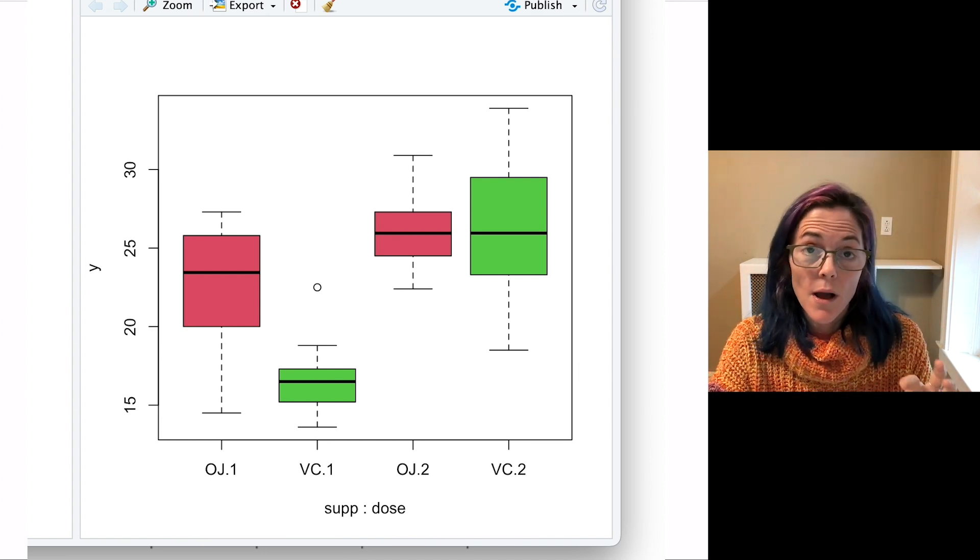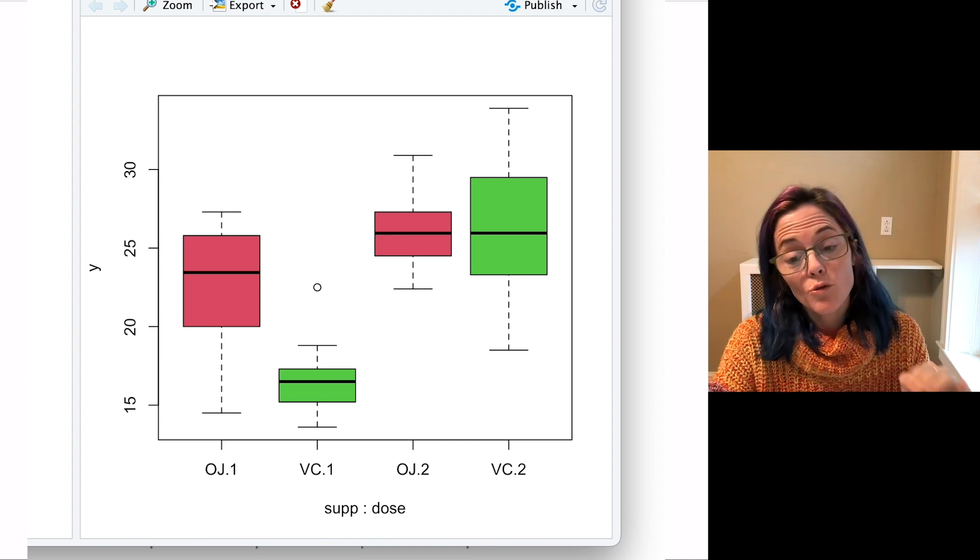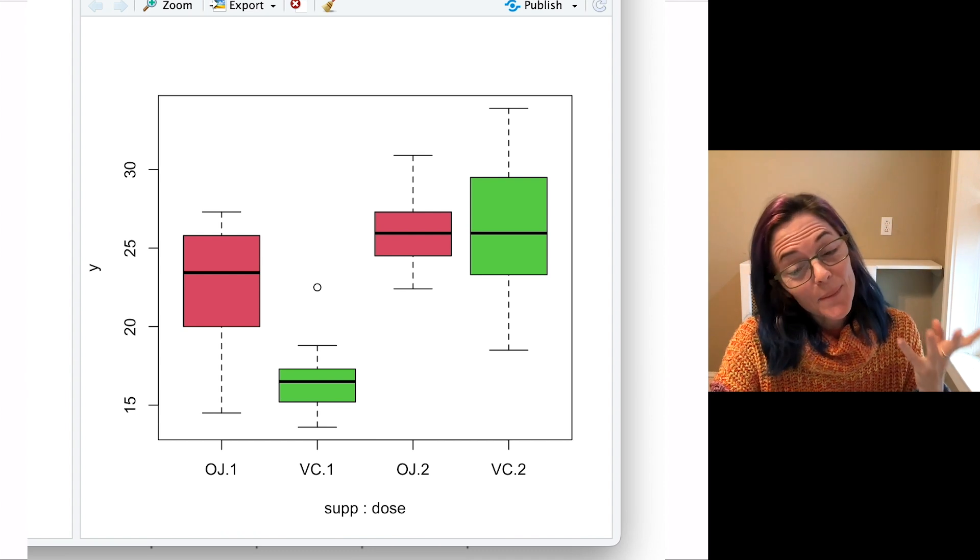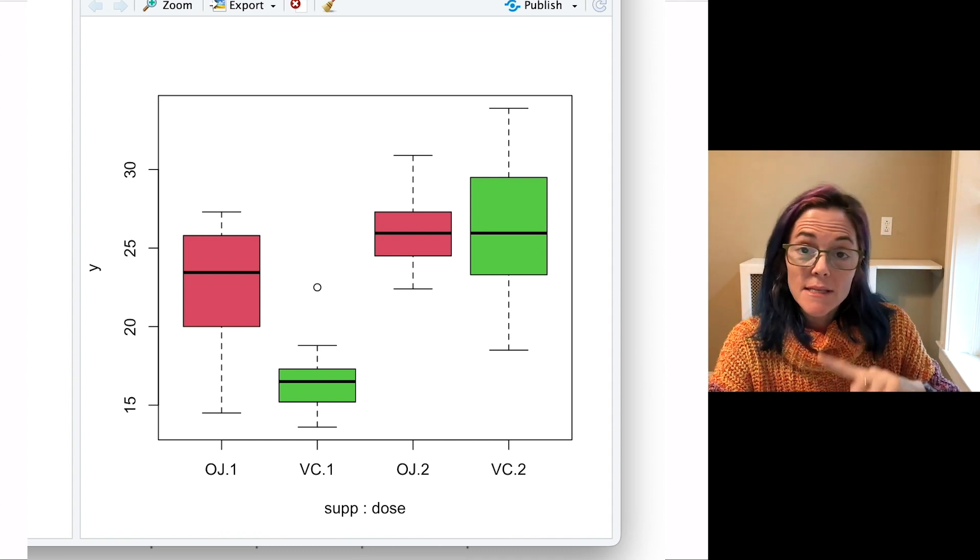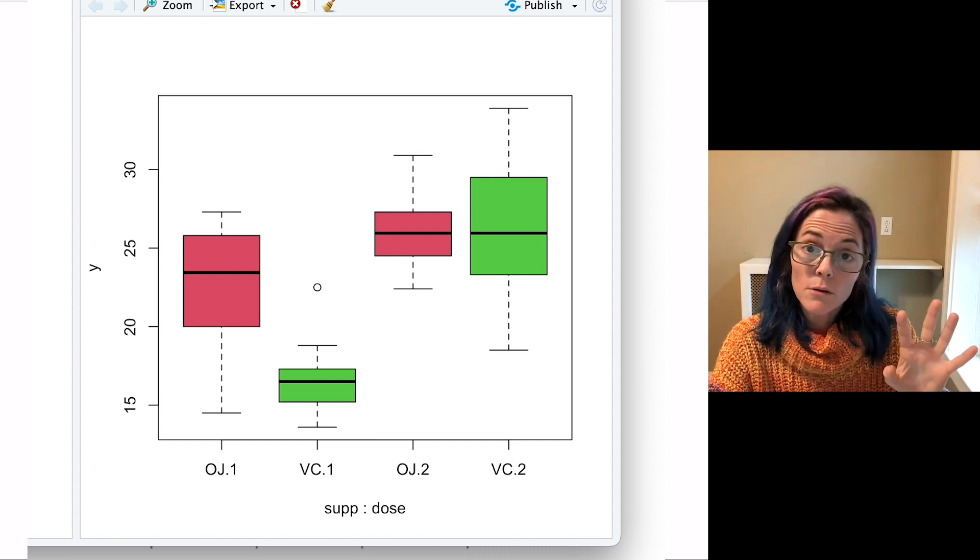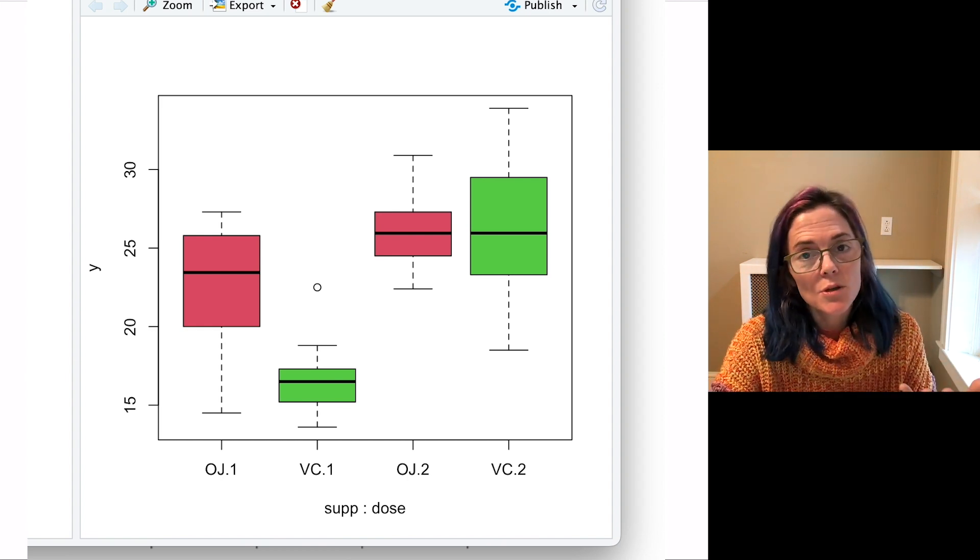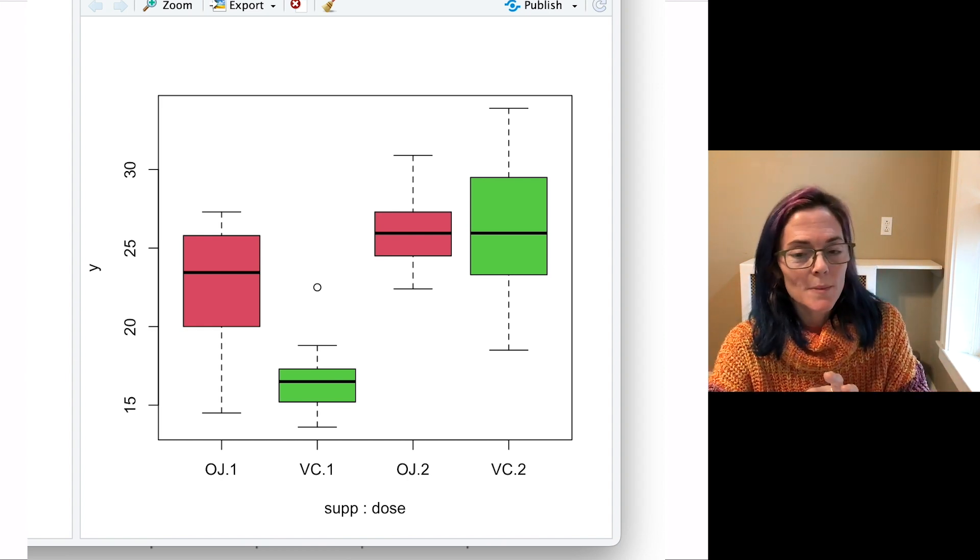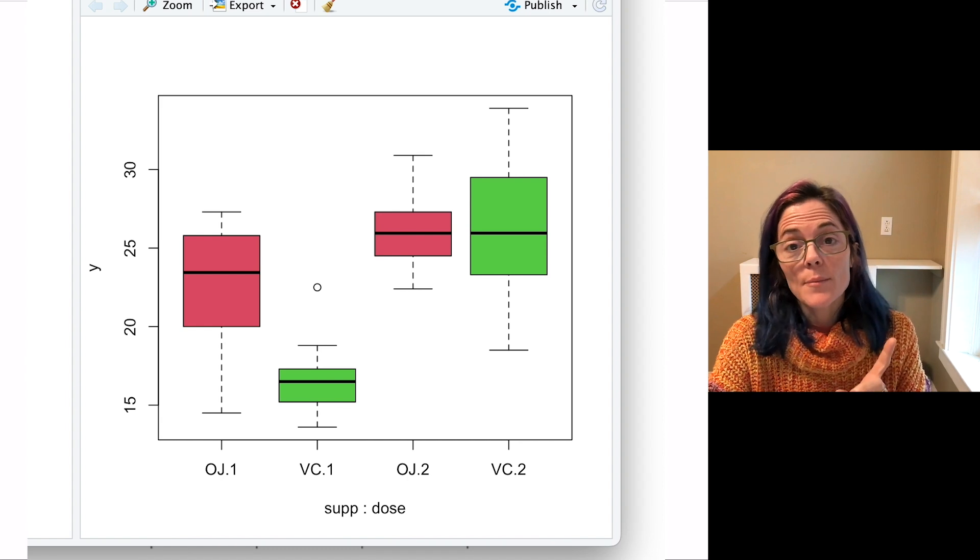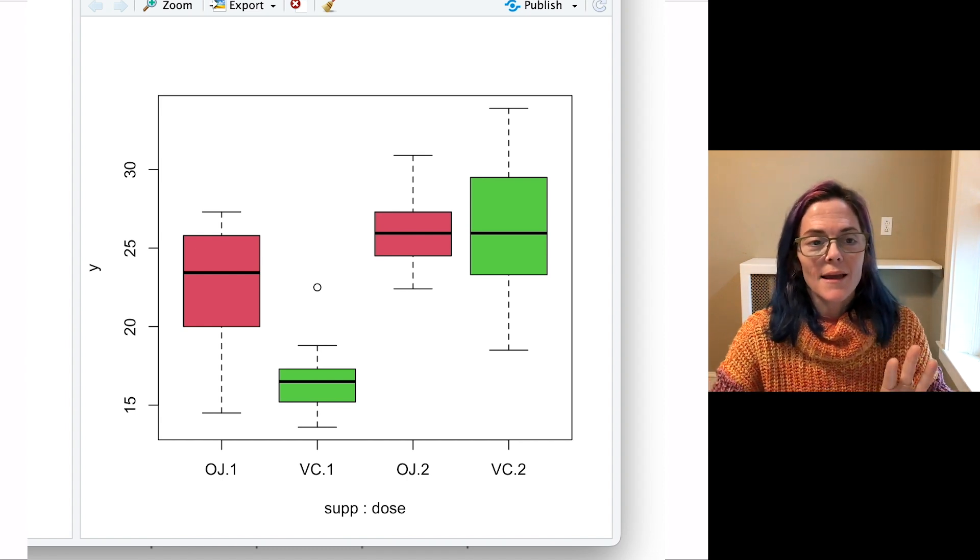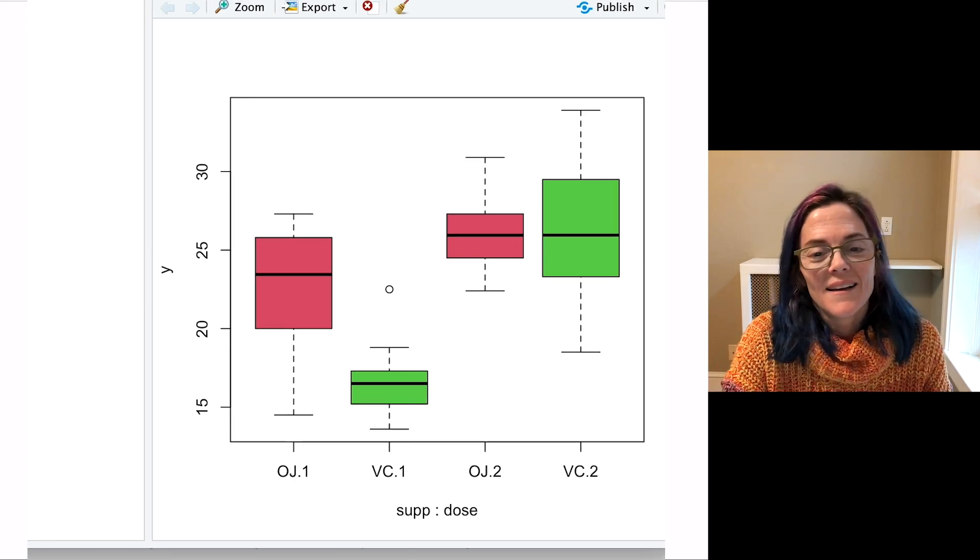All right. So we have three null hypotheses here. The first null hypothesis is that there is no effect on group means coming from the first factor, which is our supplement factor. The second is that there is no effect on the group means coming from the second factor. That's the dose, one milligram or two milligrams. And the third null hypothesis is that there's no interaction between dose and supplement type.